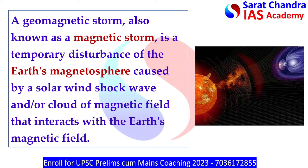A geomagnetic storm, also known as magnetic storm, is a temporary disturbance of the Earth's magnetosphere caused by a solar wind shock wave and/or cloud of magnetic field that interacts with the Earth's magnetic field.